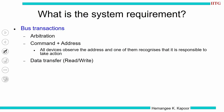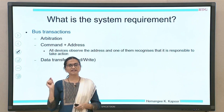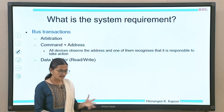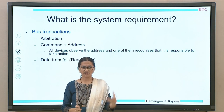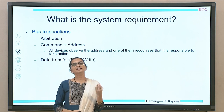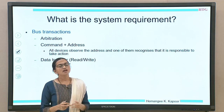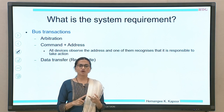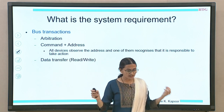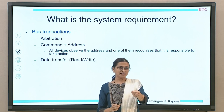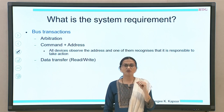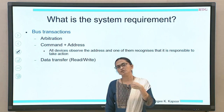For implementing snooping, the system requirements include a broadcast medium — here assumed to be a bus. Bus transactions follow a protocol with three phases. The first phase is arbitration: whenever multiple devices want to send on the bus, they cannot just start sending. They need to take permission from a bus arbiter because the bus is a common resource.